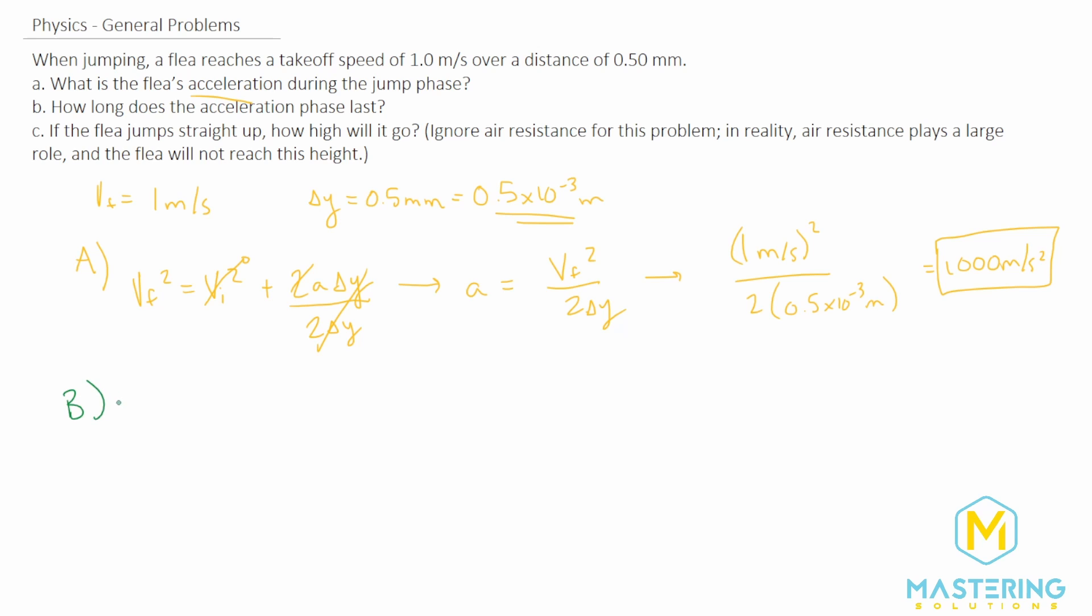For part B, they ask us how long does the acceleration phase last? Now we're trying to find a time, so we need to use a kinematic equation that has time in it. So we'll be using v final, which is equal to v initial plus acceleration times time.